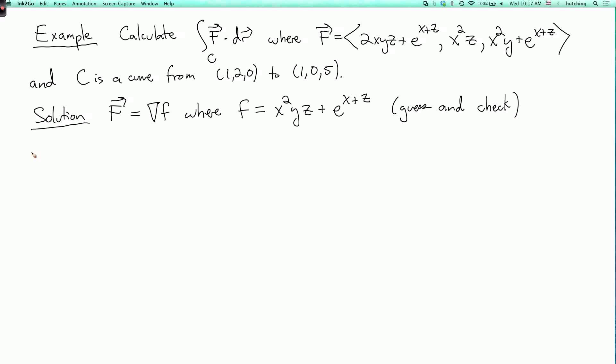Okay, and so by the fundamental theorem of line integrals, the integral over c of f dot dr is little f evaluated at the final point of the curve minus little f evaluated at the initial point of the curve. So I just have to plug in x equals 1, y equals 0, and z equals 5. Okay, so for 1, 0, 5, I get 0 plus e to the 6th minus, and then if x equals 1, y equals 2, and z equals 0, I have 0 plus e to the 1 plus 0. So you get e to the 6th minus e.